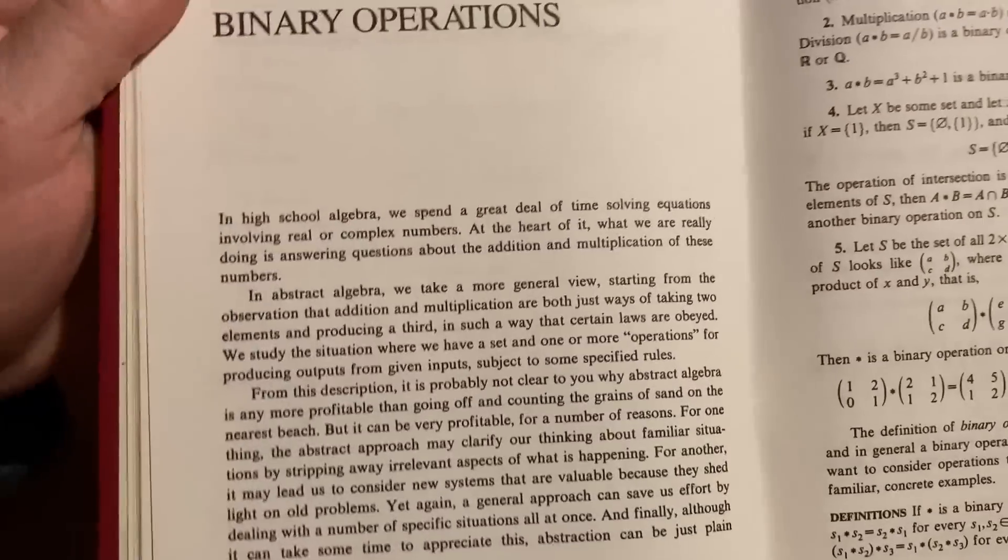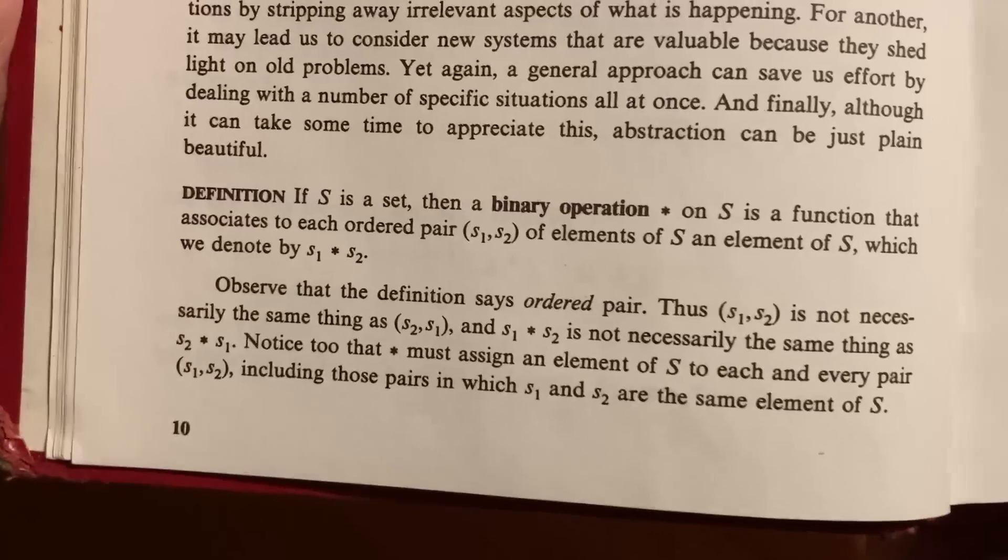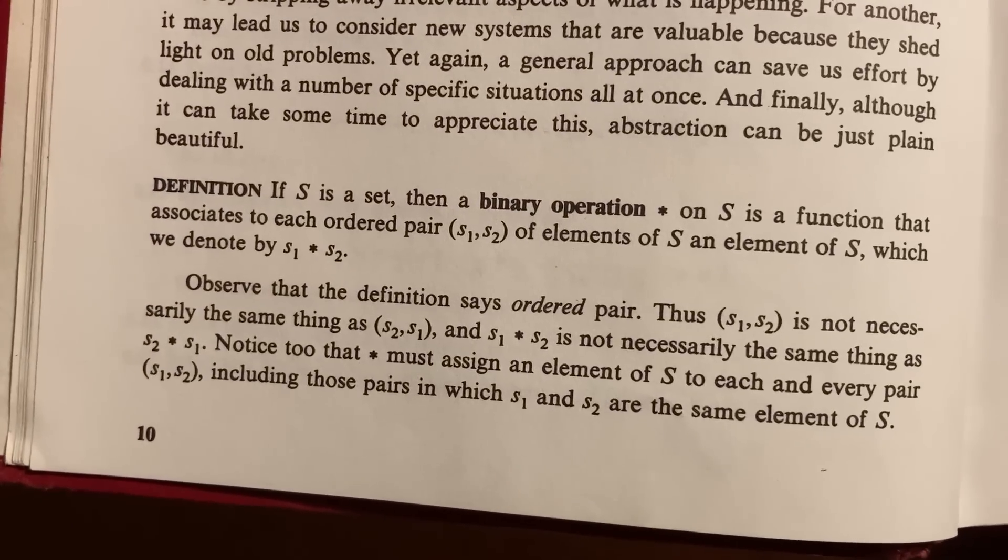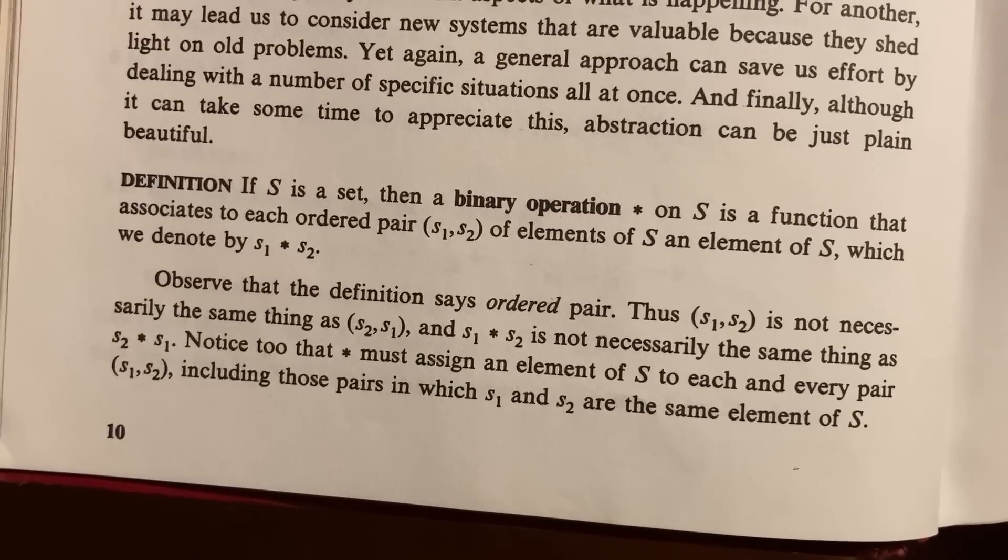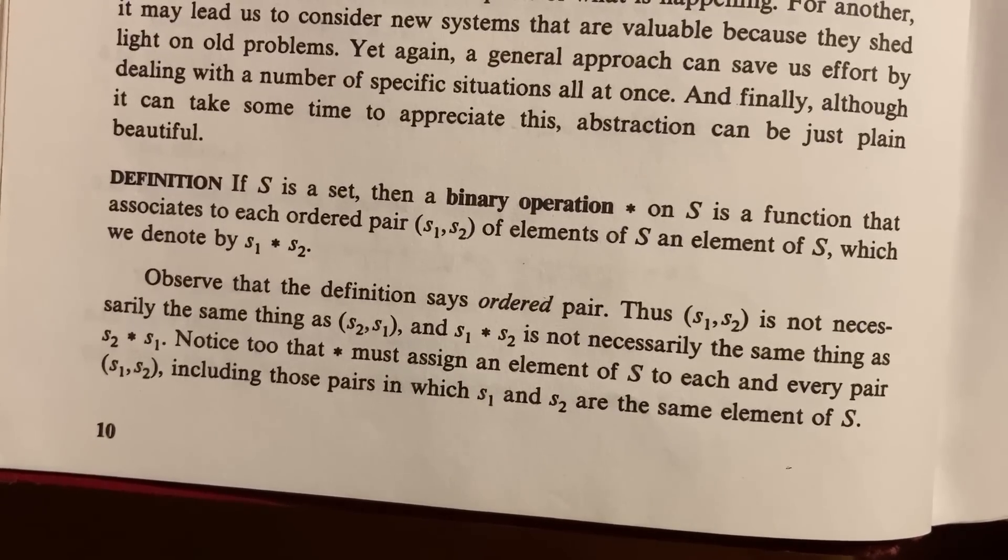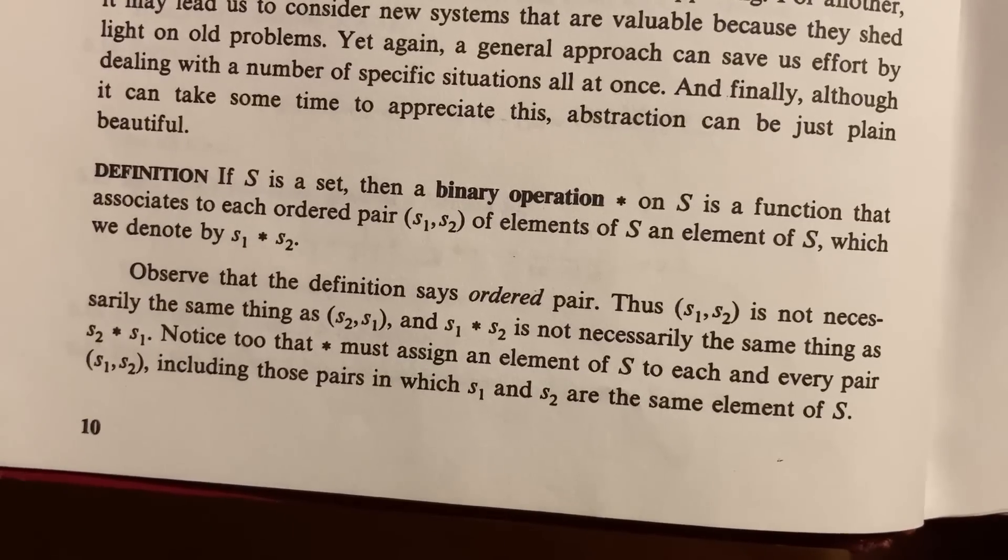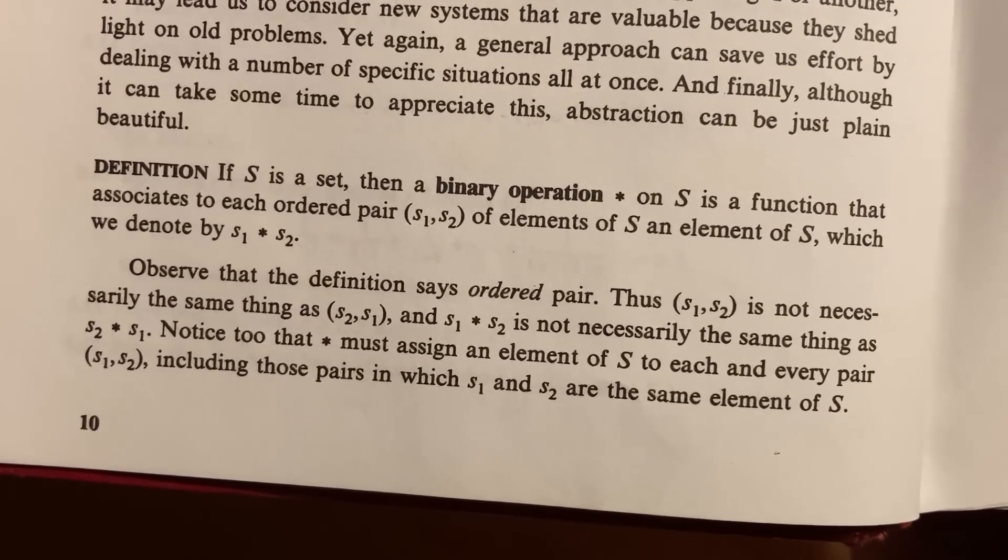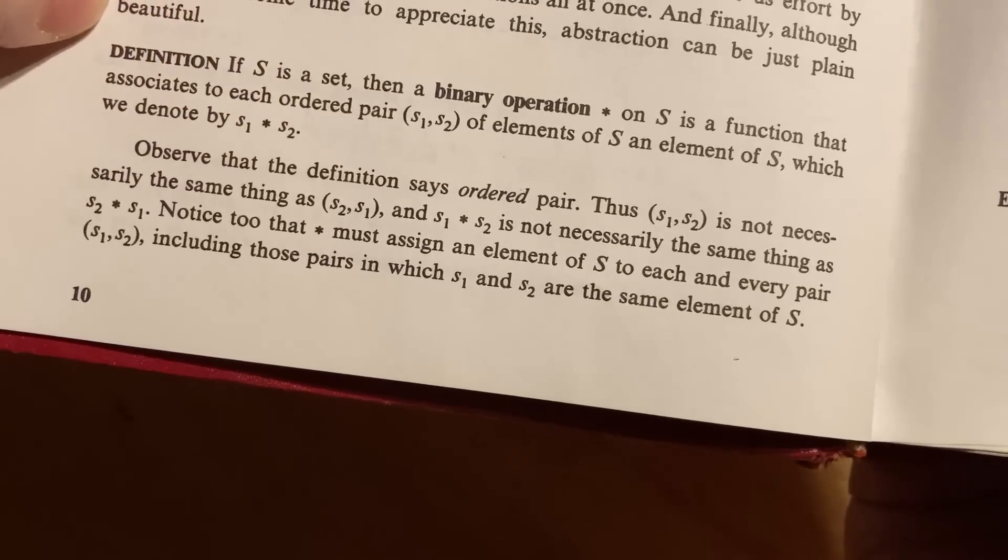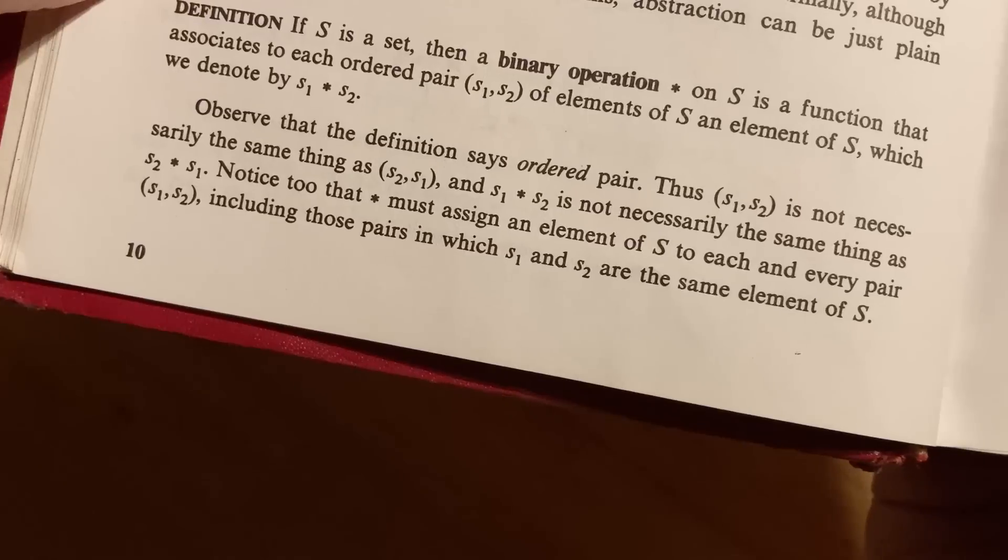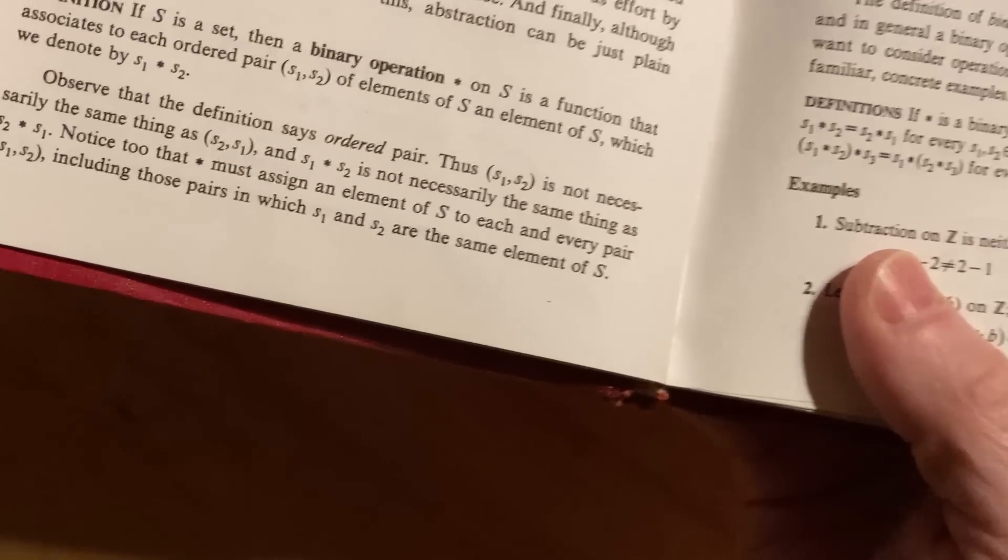So here is really the first section. It's on binary operations. And here it gives you the definition of a binary operation. It says, if S is a set, then a binary operation star on S is a function that associates to each ordered pair (S₁, S₂) of elements of S an element of S, which we denote by S₁ ★ S₂. So the new element is the star. You can call that S₃ if you like. Observe that the definition says ordered pair, so the order does matter.